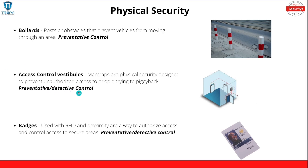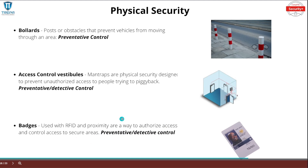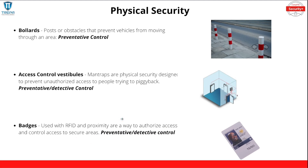This is going to be a preventative and detective control as well. Badges are used with a radio frequency ID and proximity readers as a way to authorize access and control access to secure areas. Badges along with badge readers or proximity readers are used to grant or deny you access to those secure areas — this is a preventative and detective control. Detective because when you try to badge in somewhere, that's going to get logged to that centralized badging system or server. Preventative because it won't let you in unless you have the right permissions and your badge works.